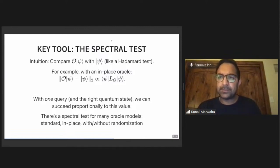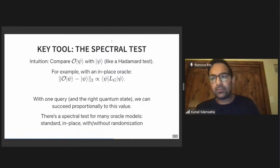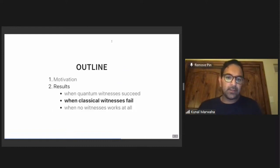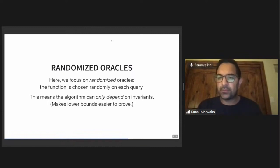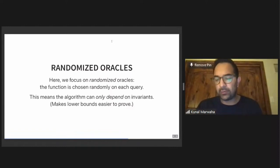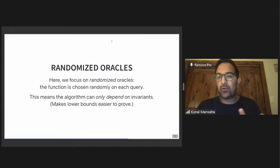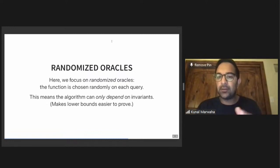Now I'll talk about when classical witnesses fail. Before I start, I want to talk about randomized oracles. You can think of randomized oracles like quantum channels, because they probabilistically apply a unitary on every application. We study these quantum channels because it can make the algorithm easier to analyze, and lower bounds easier to prove, because the algorithm can depend on fewer things.